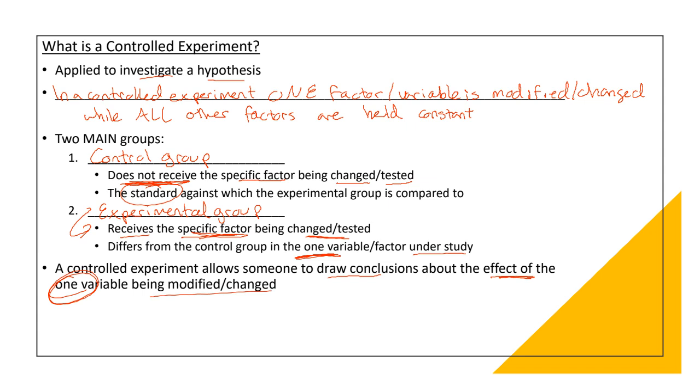A control experiment allows someone to draw conclusions about the effect of the one variable that is being modified. And that's why it's important to have these groups because you only need to change one thing. If you change many things then you don't know where the change came from.